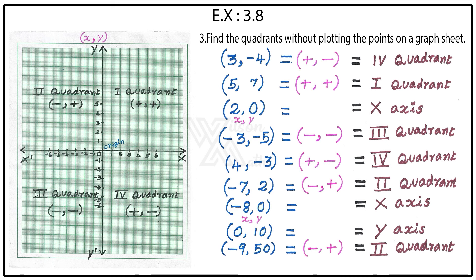Why do we take it like this? In the first quadrant, both x and y are always positive. Moving in an anti-clockwise direction: this is the second quadrant, third quadrant, and fourth quadrant. By seeing the symbol, you can say the answer. Also remember: if the form is x comma zero, it is on the x-axis; if it is zero comma y, it is on the y-axis.